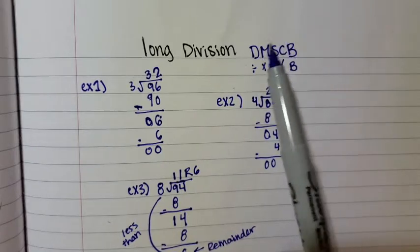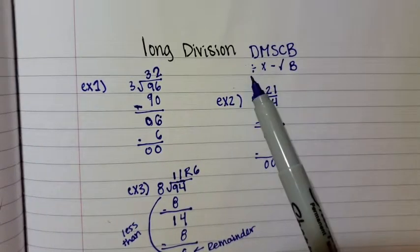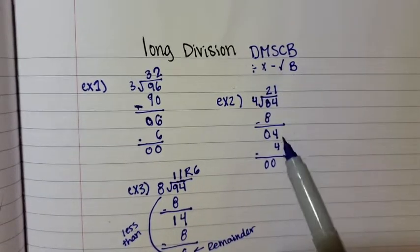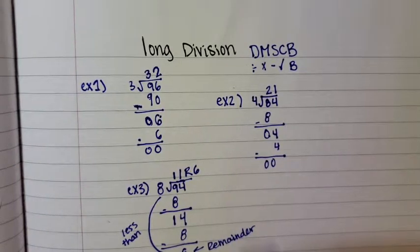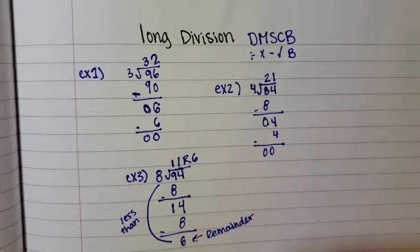The long division method—just remember to stay organized. Go by 'Does McDonald's Sell Cheeseburgers?' Make sure you divide, multiply, subtract, check to make sure it all makes sense, and then bring down your next digit. If you have a remainder, don't freak out. Sometimes it just happens. And that is long division.